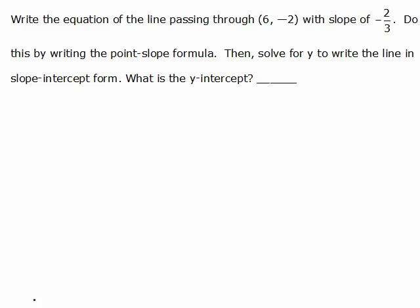Okay, write the equation of the line passing through the point (6, -2) with a slope of -2/3. Do it by writing the point-slope formula.